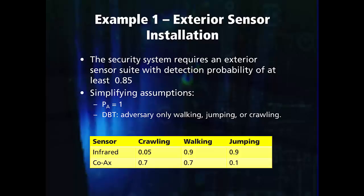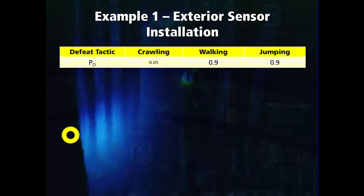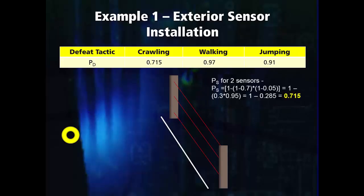The security system design requires a detection probability of 85% against the design basis threat. To simplify the problem, we will assume that the probability of assessment is 100% and that our design basis threat says the adversary can only attempt to bypass the sensor by walking, jumping, or crawling. The measured sensing probabilities for the two sensors are listed in the table here. Because the infrared detector has a probability of 90%, it already meets our requirement of 85% for both walking and jumping, but is susceptible to a crawling adversary. We must therefore couple a coaxial cable with the infrared sensor. The coaxial cable has a 70% probability of detecting a crawling adversary. However, combining the coax cable with the infrared sensor only gives a detection probability of 71.5% to detect a crawling adversary, well below our requirement of 85%.